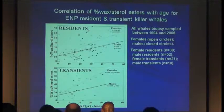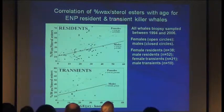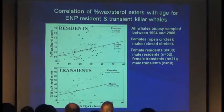The first thing we noticed was when looking at lipid classes in biopsy blubber samples — we kept noticing that older adult females had higher percentages of wax sterol esters in their blubber. That got Dave thinking. There's somewhat of a relationship with age, but it's different for females versus males, and there are also differences between residents and transients.